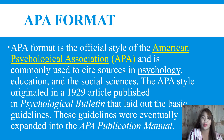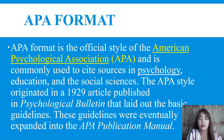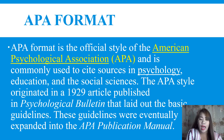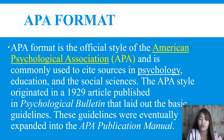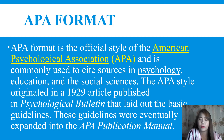The APA style originated in a 1929 article published in Psychological Bulletin that laid out the basic guidelines. These guidelines were eventually expanded into the APA Publication Manual. So why is APA format so important in psychology and other social sciences? By using APA style, researchers and students writing about psychology are able to communicate information about their ideas and experiments in a consistent format.